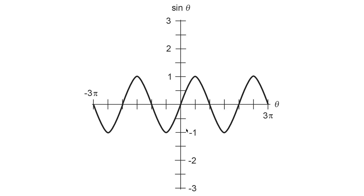The vertical axis represents the mathematical value of the function, and in this case the positive and negative peak amplitudes of the wave are 1 and minus 1. That is the simple sine function.